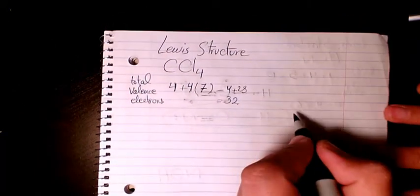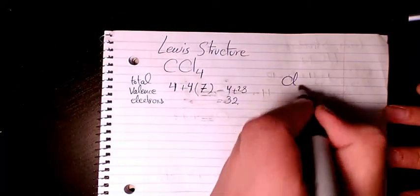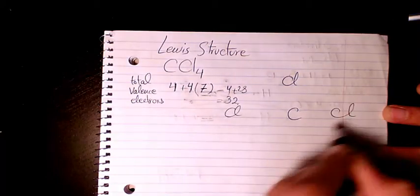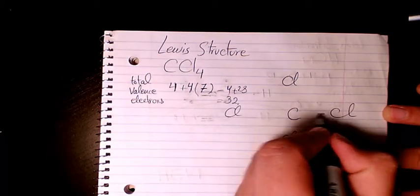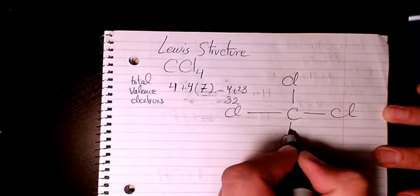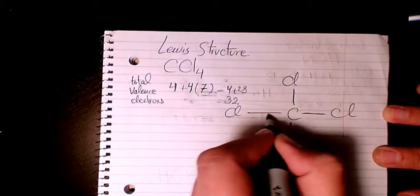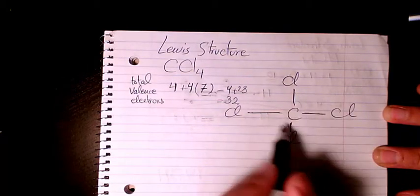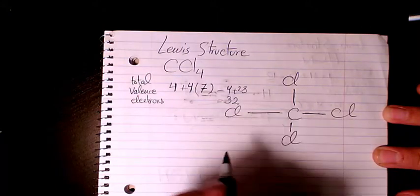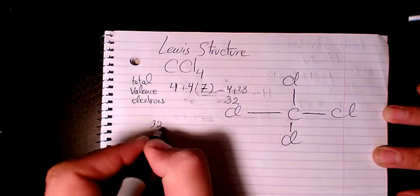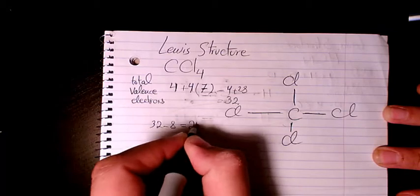Then I need to start drawing the Lewis structure. First I connect it with single bond from each side, so we have four bonds. Four times two, we have eight electrons involved, so the remaining number of electrons is going to be 24 electrons.